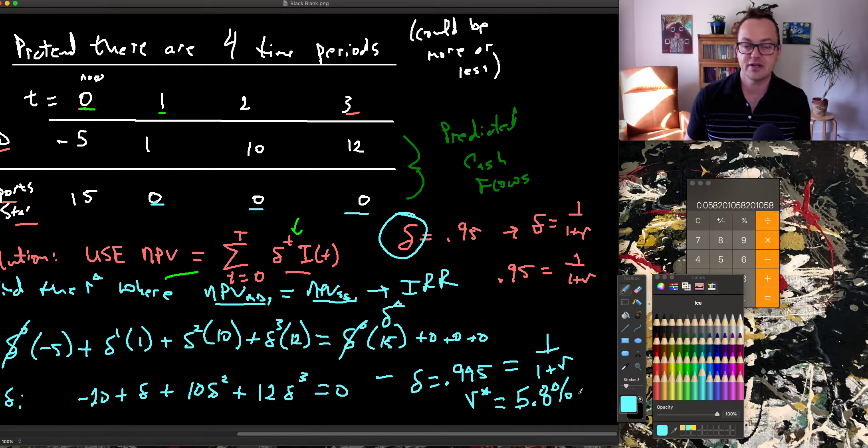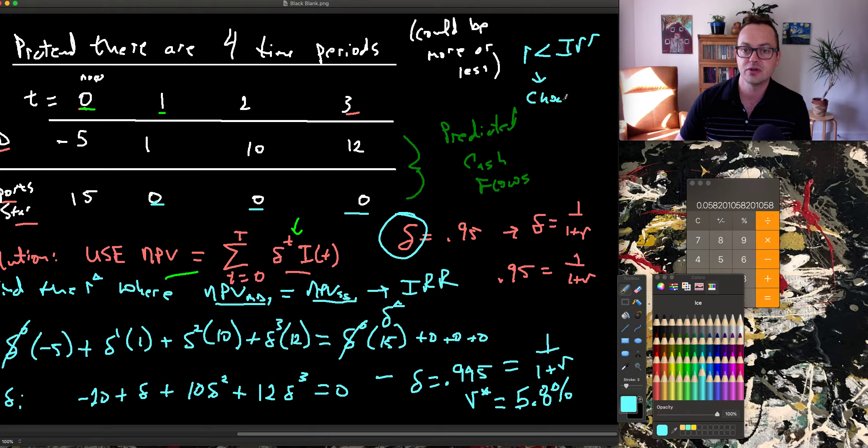Okay, last thing here, what does that mean? Well, remember, our previous rate was, I think this was 0.053, 5.3%. The decision here is when r is less than IRR, I'll choose the long-term investment.